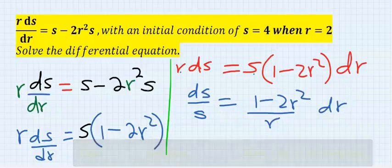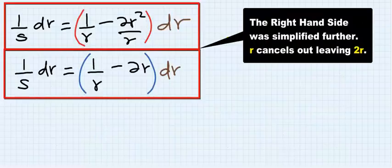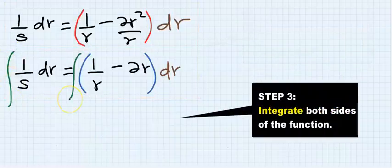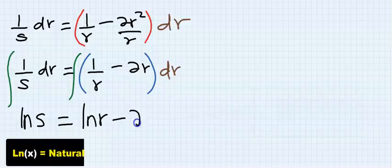Now that the variables are separated, next we integrate. Integrating 1 over s, you're going to have ln s. Integrating 1 over r, you're going to have ln r, and integrating this you're going to have 2r squared over 2 plus c.